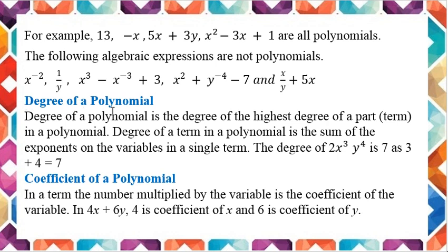Now we are moving to the degree of a polynomial. The degree of a polynomial is the highest degree of any term in the polynomial. The degree of a term is the sum of the exponents on the variables in that single term. For example, the degree of 2x cubed y to the 4th is 7, because x has power 3 and y has power 4, and 3 plus 4 equals 7.